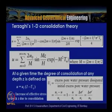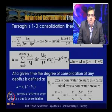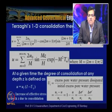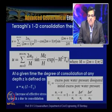At a given time, the degree of consolidation at any depth z is defined as the ratio of excess pore water pressure dissipated to the initial excess pore water pressure: Uz = (ui − u)/ui = 1 − u/ui = Δσ'/u₀, where Δσ' is the increase in effective stress and u₀ is the initial excess pore water pressure.